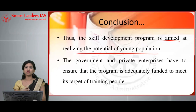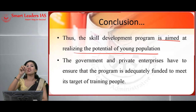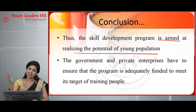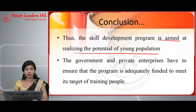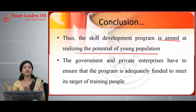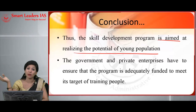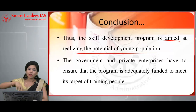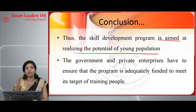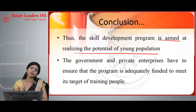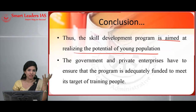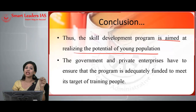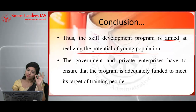This skill development program is aimed at realizing the potential of young population — you can include that in your conclusion. If we are not able to make use of this demographic dividend, it is a big loss for the country as a whole. By 2022, India is supposed to rank number one with respect to young population, which is why countries like Japan come to India. We need to ensure this demographic dividend is harnessed in the best possible way; otherwise, we cannot think of development, as the problem of unemployment still exists.